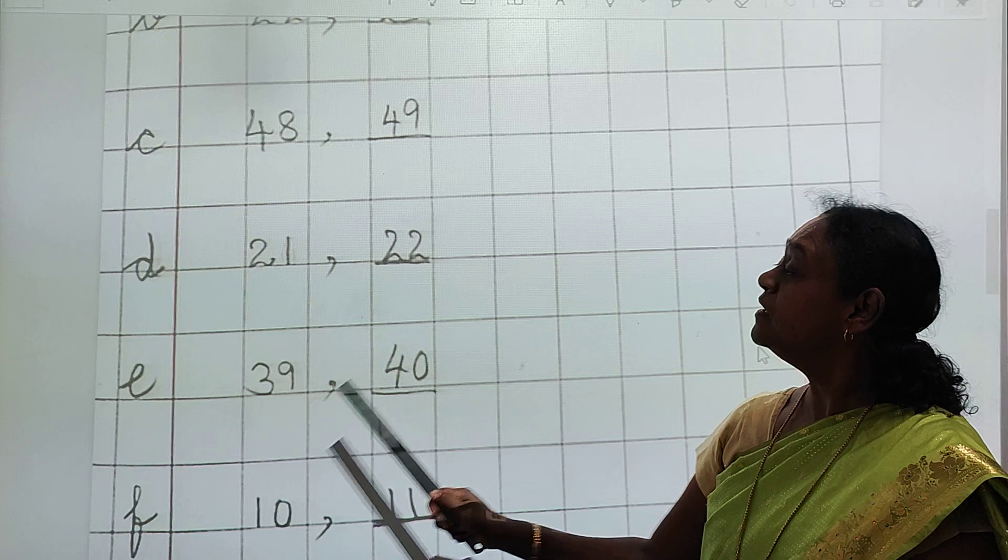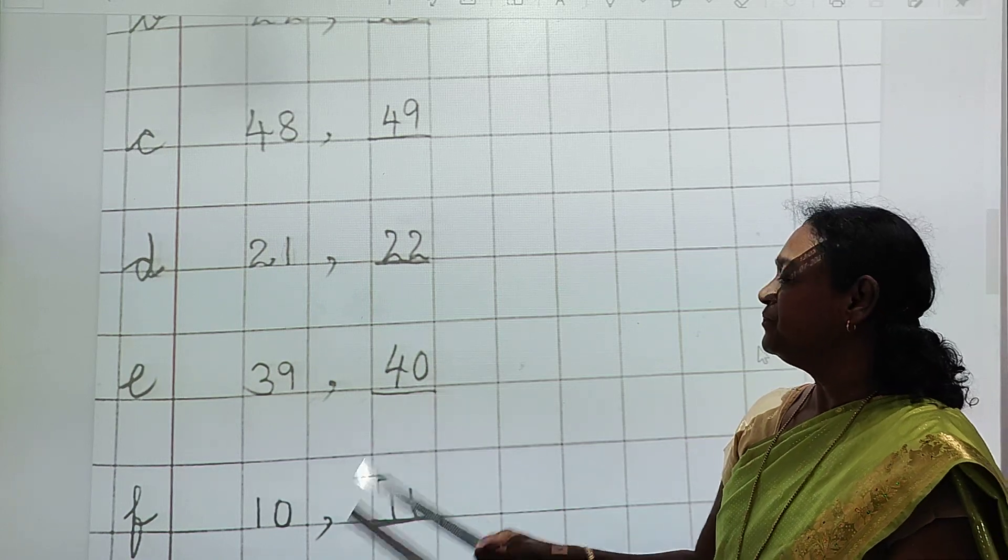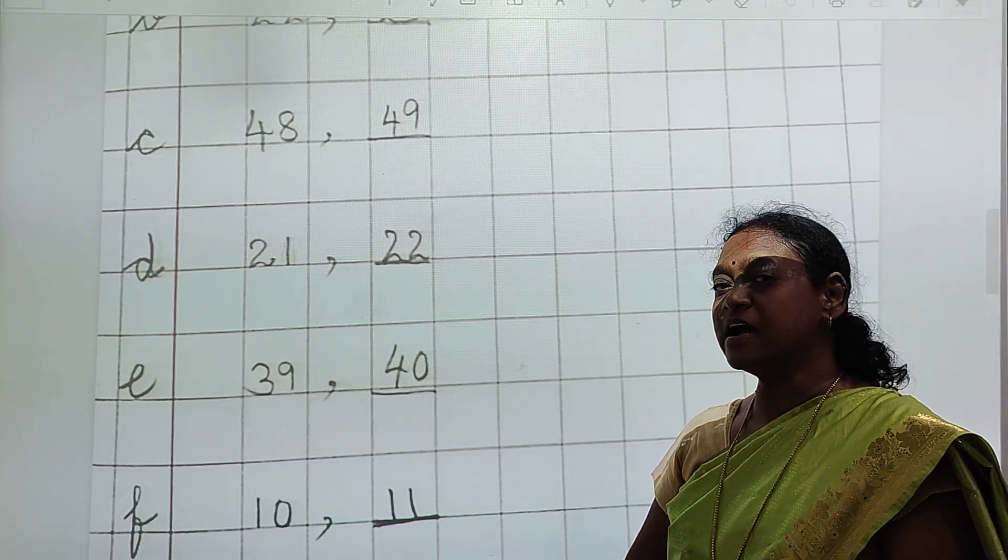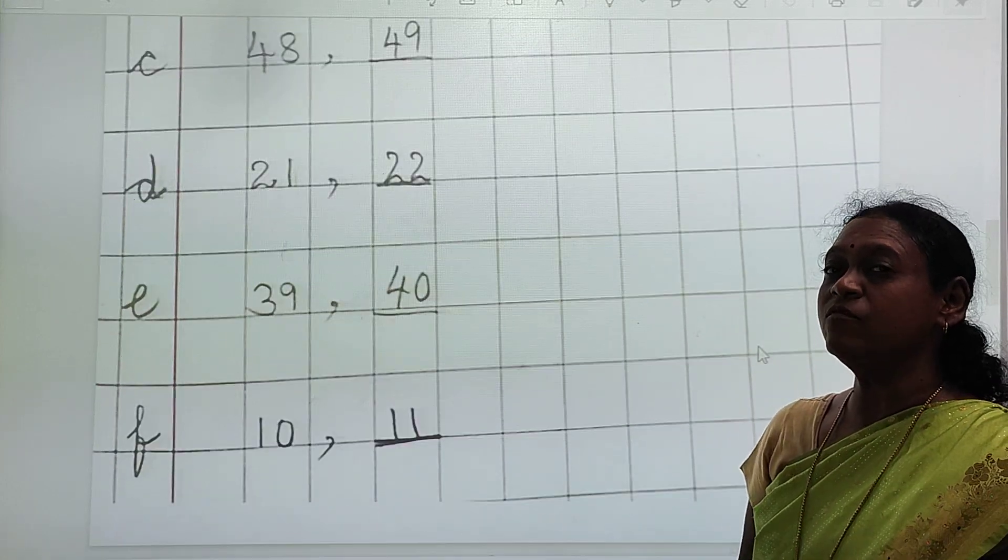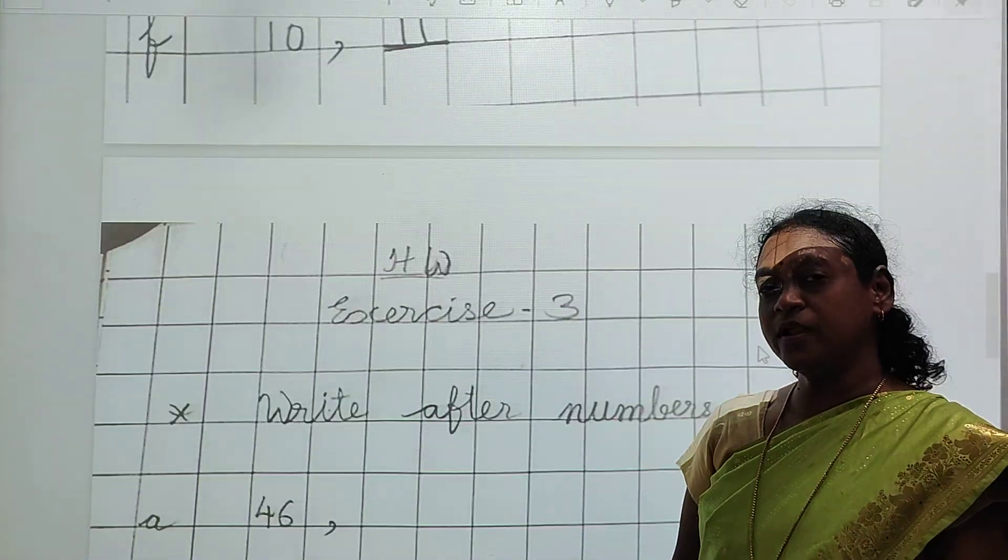So what will come 39 ke baad? 40. Okay. This is 10. What comes after 10? 11. You have to learn properly 1 to 50 orally also.